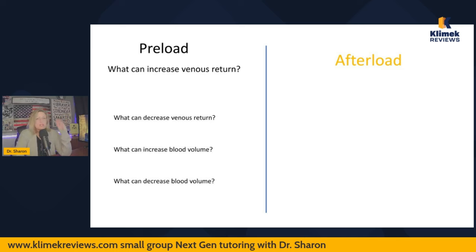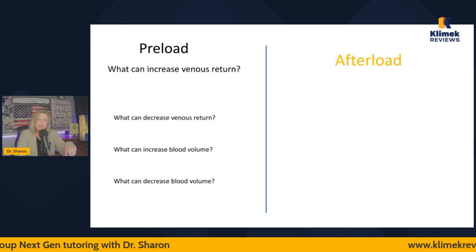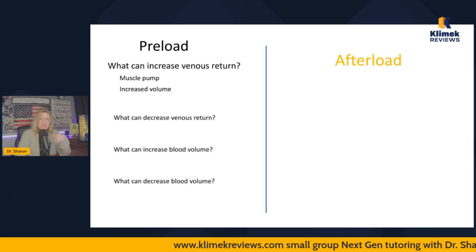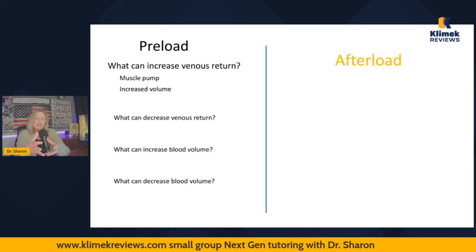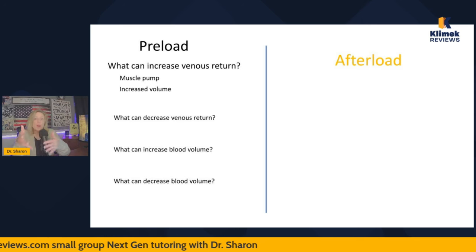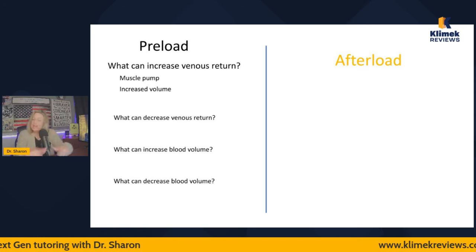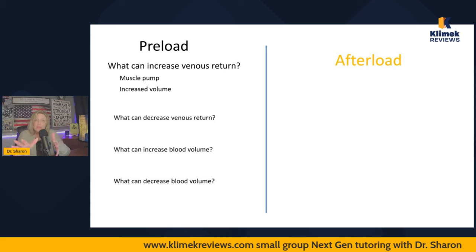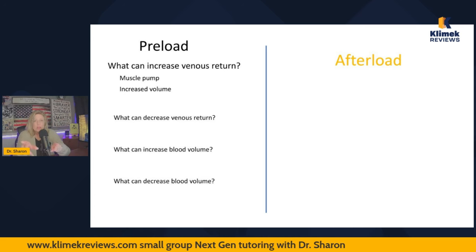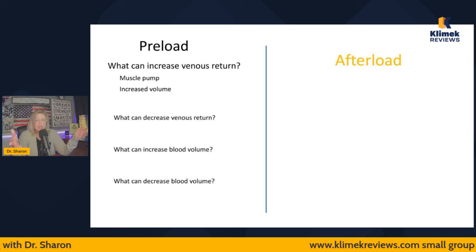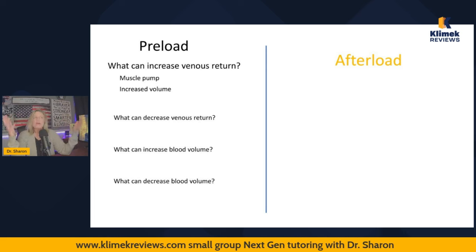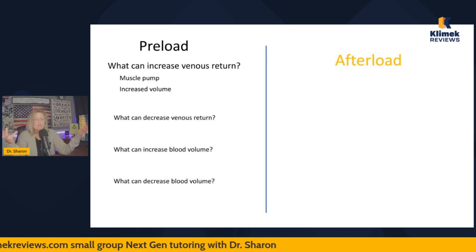Let's talk about what can increase venous return, since venous return and blood volume are the two things that affect preload. Primarily the muscle pump increases venous return — when you walk and your muscles contract against the veins, that increases venous return significantly. That's why when people are on bed rest, preload goes down. That's why we say get people out of bed, get them walking, do range of motion — active or even passive range of motion activities help increase preload, which helps increase cardiac output.